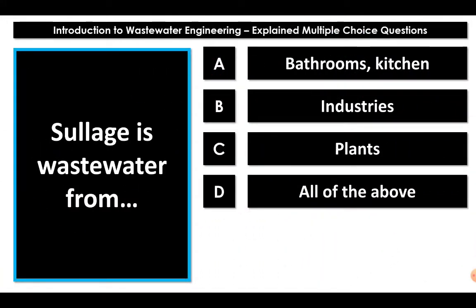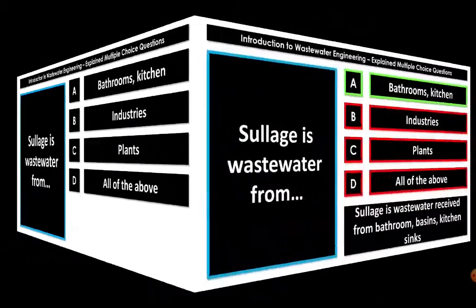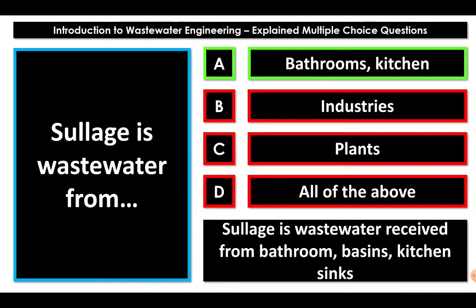Question: sullage is wastewater from — bathroom and kitchen waste, industrial waste, manufacturing plant waste, or all of the above? When we say sullage, we are referring to wastewater received from bathrooms, basins, and kitchen sinks. It is not industrial or manufacturing plant wastewater. The correct answer is: sullage is wastewater received from bathrooms and kitchen.